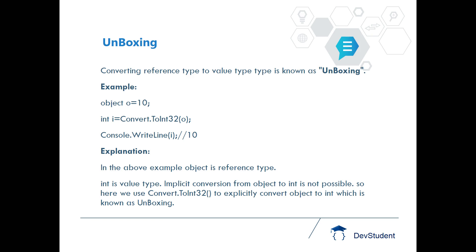Coming to unboxing: if you are converting reference type to value type, it is known as unboxing. In the example, we are converting a value inside an object type to an int type — that means reference to value type — so it is called unboxing.